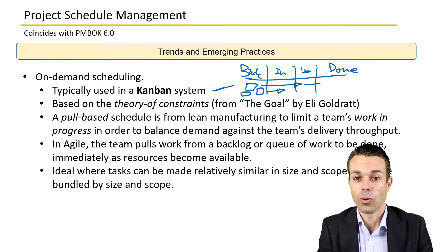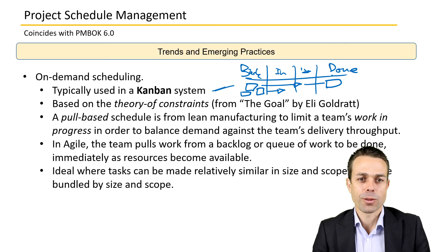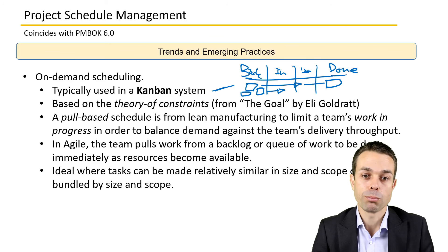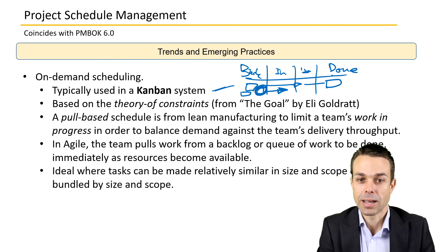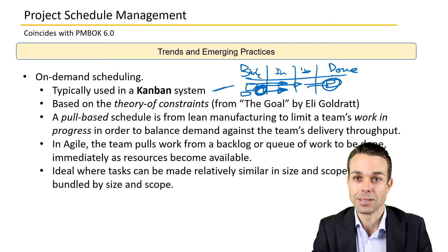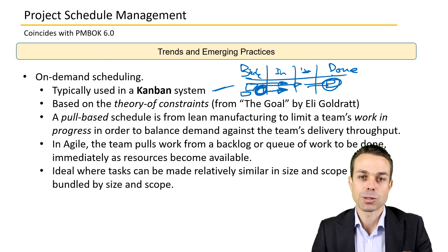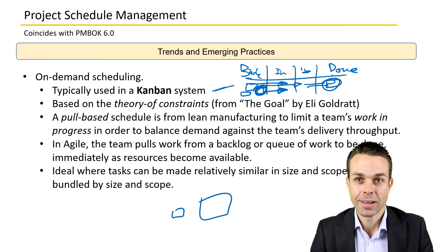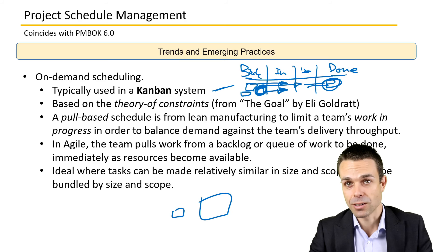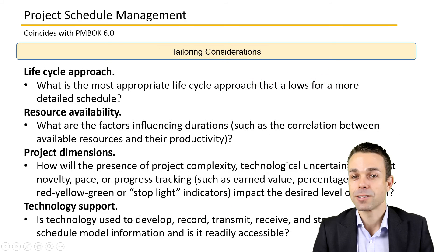In the Kanban system, we take cards or activities and move them across the board from backlog all the way to done. This is based on the Theory of Constraints from 'The Goal' by Eli Goldratt — team members pull work when they're ready. For example, Billy is ready so he puts an item in progress; Jerry is still busy, but once he finishes his current item he can pull the next one. This works best when tasks are relatively similar in size so the workload stays even and easy to track.